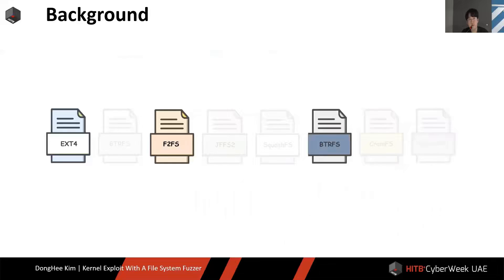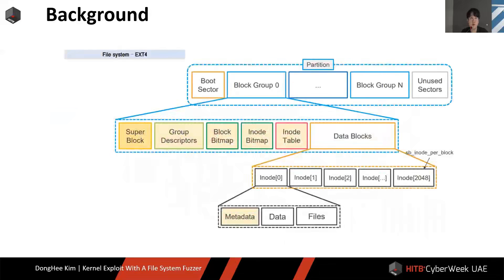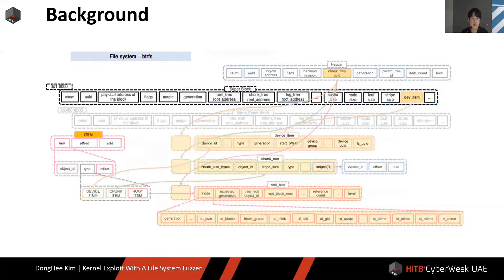Our targets are EXT4, F2FS, and BTRFS, which are file systems that are auto-mounted in Ubuntu. EXT4 is auto-mounted in many OSes. As the most basic file system, there is metadata in the block based on an inode table, and we mutate this. BTRFS is light and efficient with tree-based memory management and features automatic defragmentation. BTRFS is optimized for SSD and allows you to use it like a single SSD, although multiple devices are plugged in.